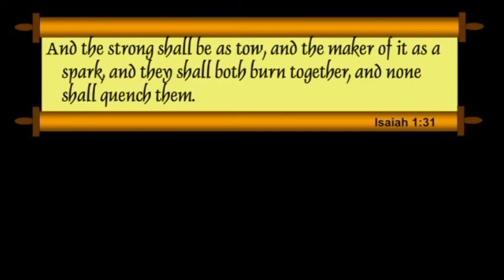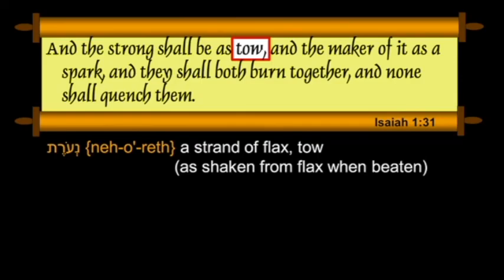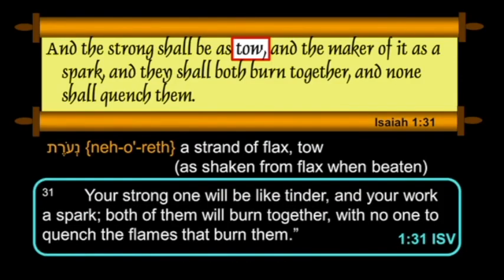The last verse: "And the strong shall be as tow, and the maker of it as a spark, and they shall both burn together, and none shall quench them." If you stumble through that in the King James, you run the risk of missing the point. Tow is the coarse part of flax or hemp shaken off when the flax is beaten — a strand of flax. The ISV cuts through all that: "Your strong one will be like tinder, and your work as a spark. Both of them will burn together with no one to quench the flames that burn them." This is one of those places where the ISV certainly cuts through the confusion.